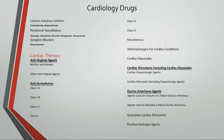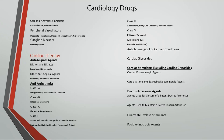Diuretics include loop diuretics, low-ceiling diuretics including thiazide diuretics, thiazide-like diuretics, potassium-sparing diuretics including aldosterone antagonists, osmotic diuretics, vasopressin antagonists, and carbonic anhydrase inhibitors. Finishing off the antihypertensives branch, we have peripheral vasodilators and ganglion blockers. Under cardiac therapy, we have anti-anginal agents including nitrites and nitrates. Anti-arrhythmics are composed of class 1A, 1B, 1C, 2, 3, 4, and miscellaneous anti-arrhythmics, as well as anticholinergics for cardiac conditions and cardiac glycosides.